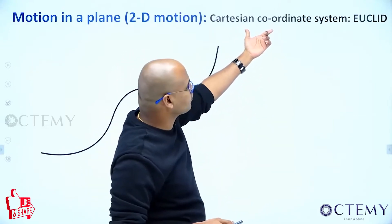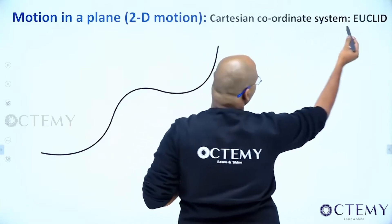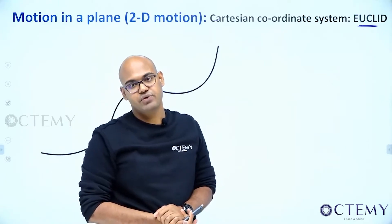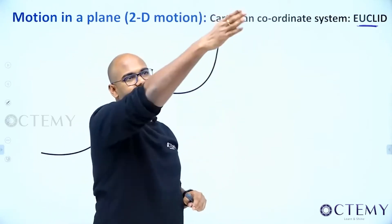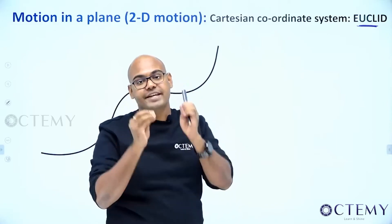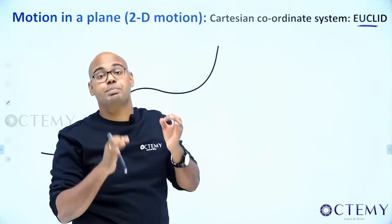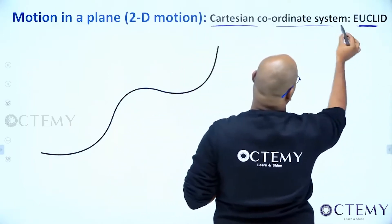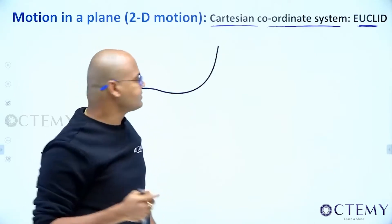Newton borrowed the Cartesian coordinate system developed by Euclid — well before Newton. Euclid introduced the Cartesian coordinate system, a beautiful system to define space. In space, I want to mark some points mathematically. If I want to locate a point mathematically in space, Euclid gave a simple and beautiful way to do that. He gave coordinates for each and every point in space.